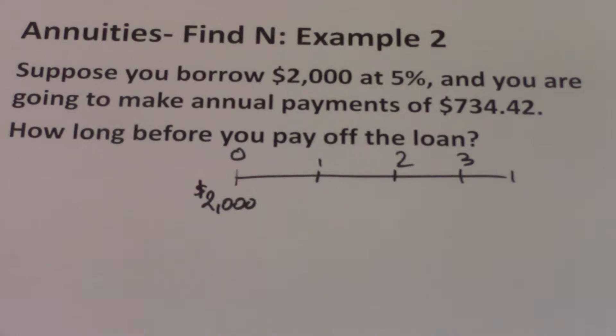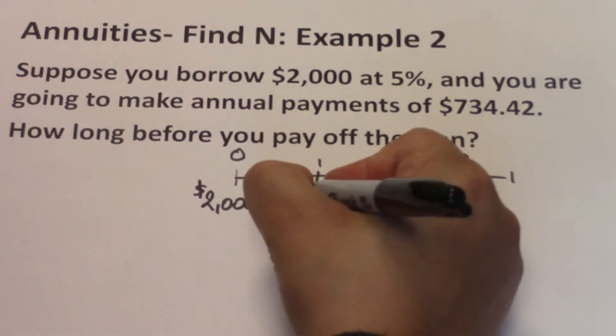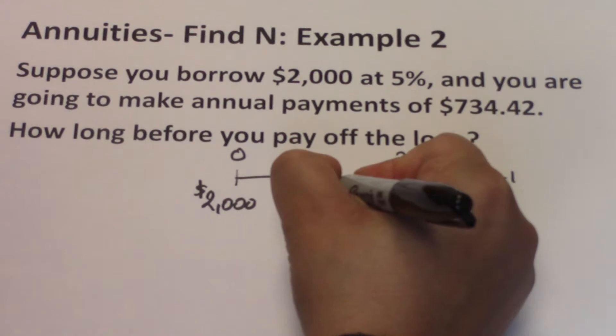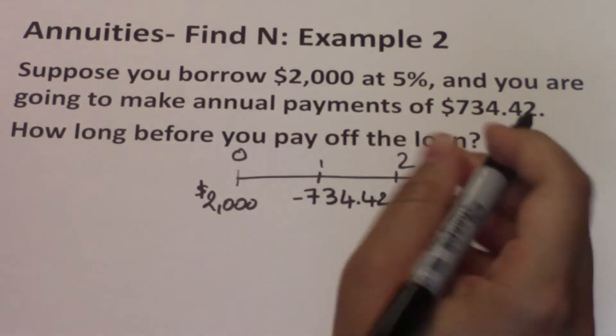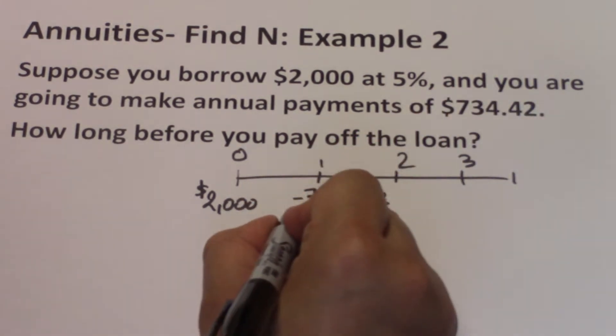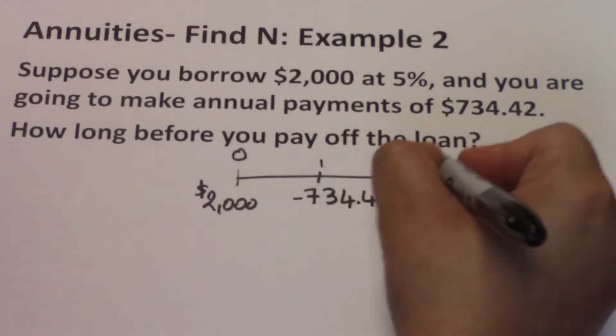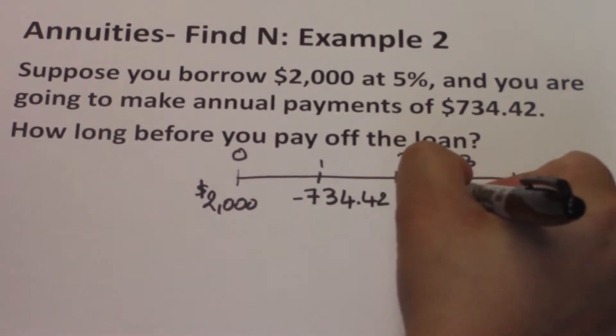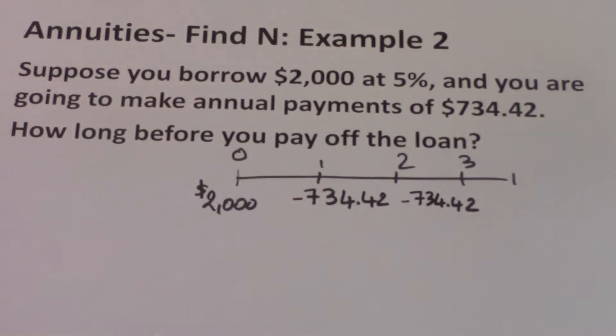And you are going to make annual payments of $734.42. So each year, you're going to make that payment. That would be a cash outflow to you because you're spending that money, and so I'm going to show it as a negative number. So each year, you are paying negative $734.42.